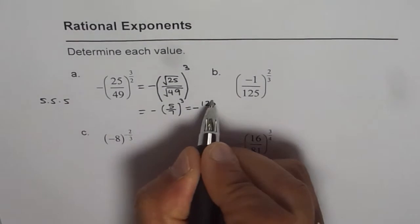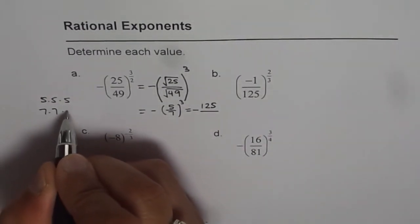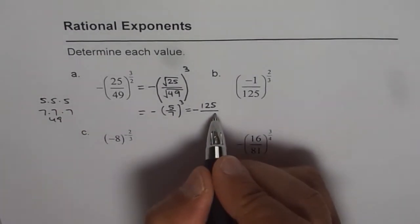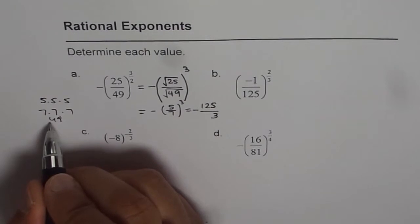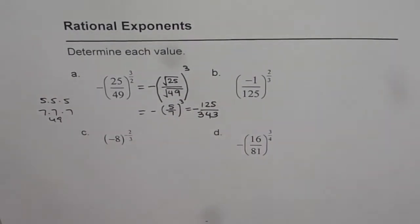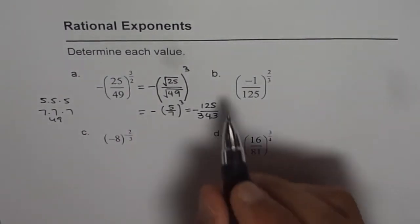So 5 cubed is 125. So we get negative 125 divided by 7 cubed. 7 times 7 is 49, 49 times 7: 7 times 9 is 63 and 7 times 4 is 28, 28 plus 6 is 34. So we get 343. So that is the answer for the first one.